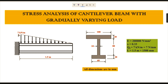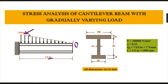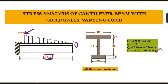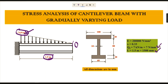The load acting on this beam is a gradually varying load, starting from 7 kilonewton per meter to 0. The unit for this drawing is given in meters, so we convert from meters to millimeters. The entire length is 1.5 meters, which converts to 1500 millimeters, and the maximum load of 7 kilonewton per meter converts to 7 Newton per millimeter.